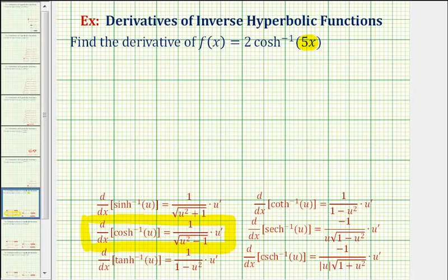Looking back at our function, we're going to let the inner function of five x be equal to u, so we can think of our function as two inverse hyperbolic cosine of u. If u is equal to five x, we know we're going to need u prime to apply the chain rule. u prime is the derivative of five x with respect to x, which would just be five.